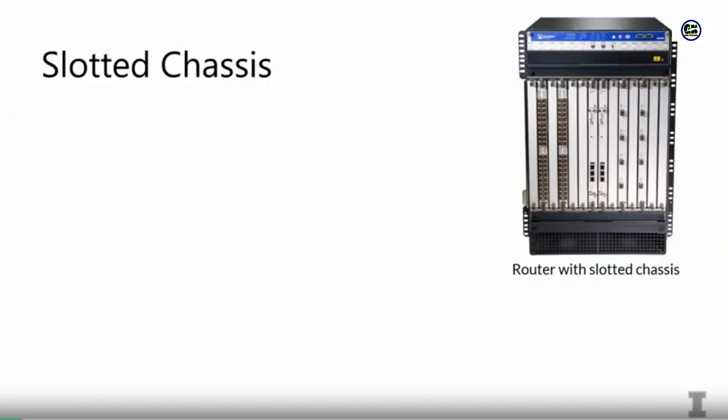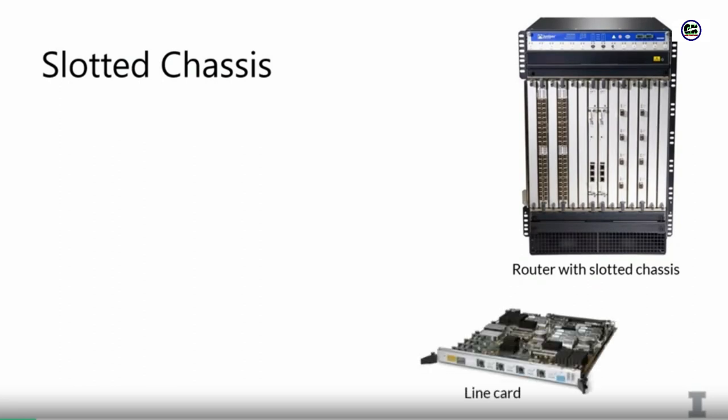Just to talk about controlling data planes in practice, I want to show you a few more pictures. This is a picture of another chassis of a router — it's a little bit bigger. If you have a large router, these are typically built in modular fashions with slotted chassis. The idea behind slotted chassis is you have a set of line cards and you can remove these line cards and put them in.